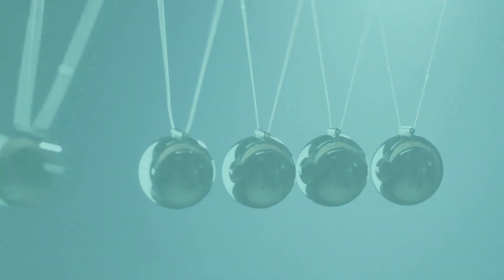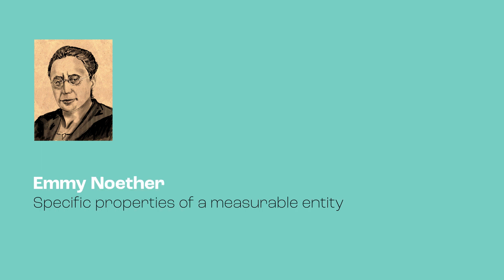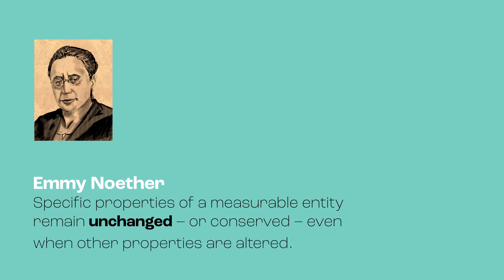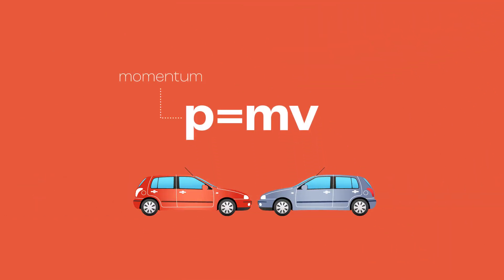According to Noether's theorem, every symmetry in nature has an associated conservation law, meaning that specific properties of a measurable entity remain unchanged, or conserved, even when other properties are altered. Professor Pizlo provides the example of two vehicles involved in a collision. Whilst the vehicles themselves may be damaged beyond repair, one characteristic that is conserved is the total momentum — that is, the product of the mass and velocity of the colliding vehicles. Thus, the conservation of momentum in this case results from the symmetry of the laws of motion.